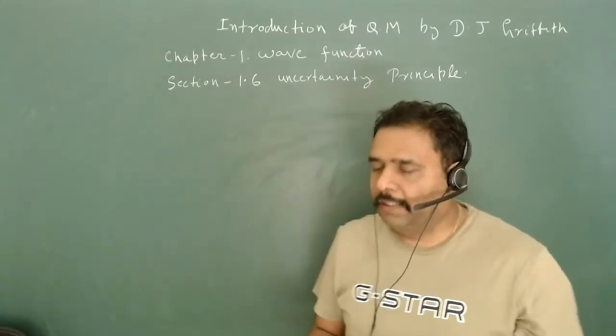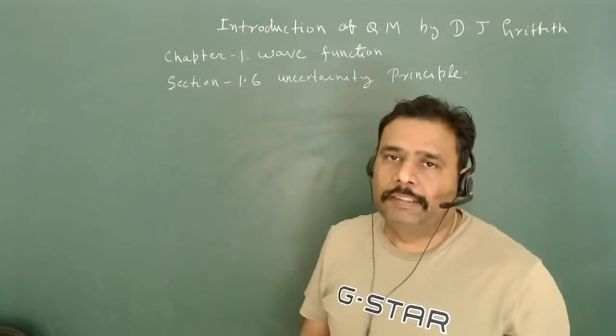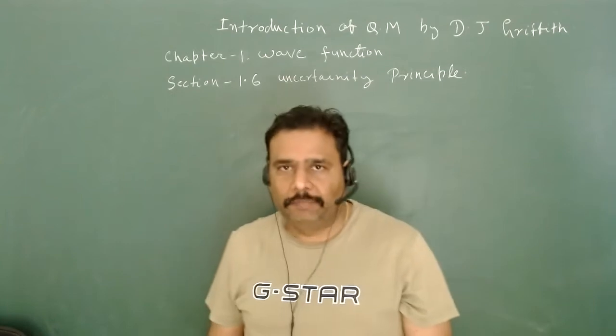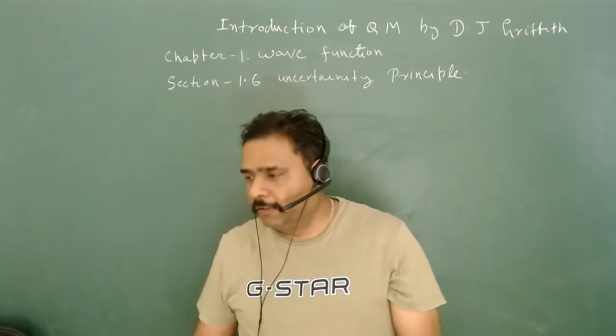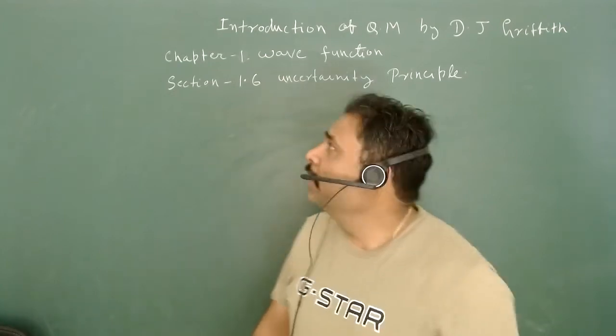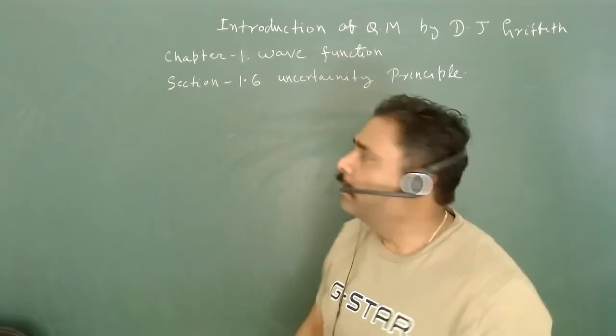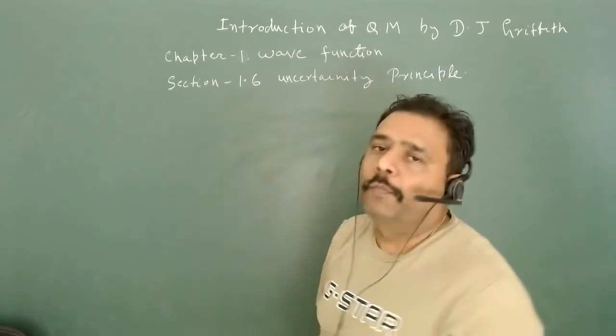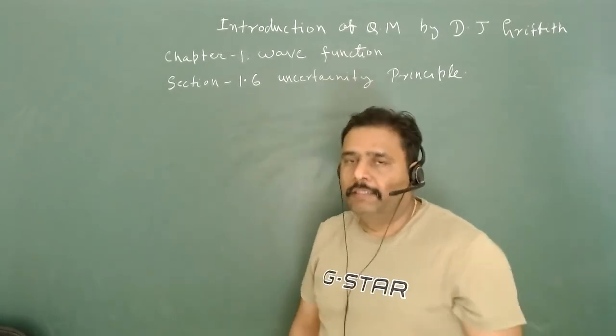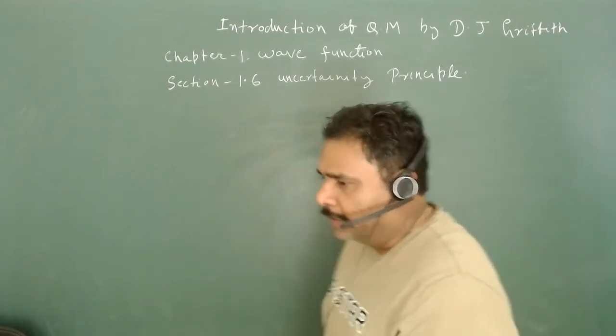Hello, friends. Let's come to the next section of our book, Introduction to Quantum Mechanics by D.J. Griffith. We are solving the whole book step by step. We are in the first chapter, named Wave Function, and now we are in section 1.6, named Uncertainty Principle.